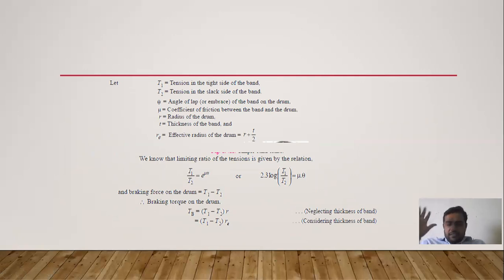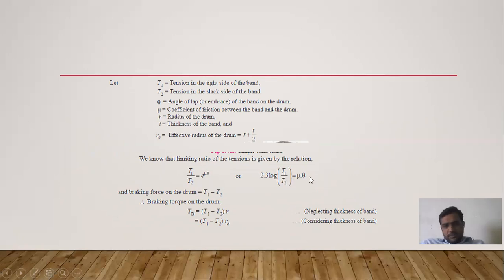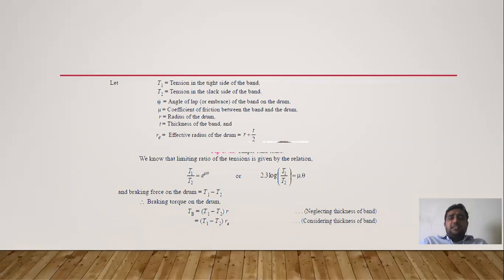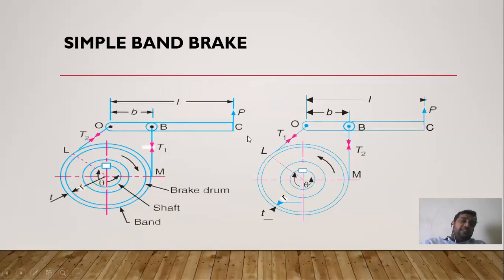The braking force on the drum is T1 - T2, and the braking torque is: tb = (T1 - T2) * r. If we neglect the thickness of the band, we use r; if we consider the thickness of the band, we use the effective radius re = r + t/2, so tb = (T1 - T2) * re.